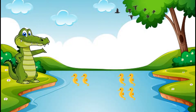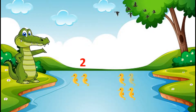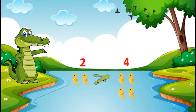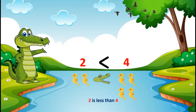Now in this example, on the left side there are one, two sea horses and on the right side there are one, two, three, four sea horses. Now we know that two sea horses are less than four sea horses, so the closed end of my mouth will be towards the smaller number two. So we will say that two is less than four.